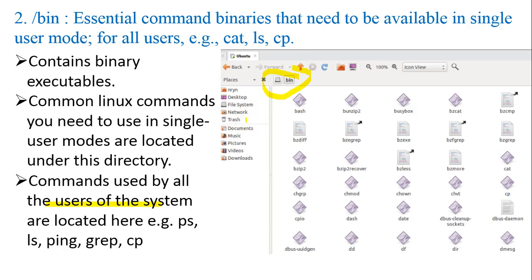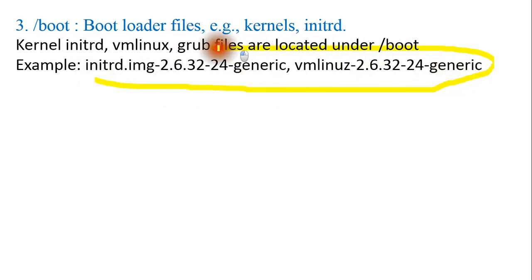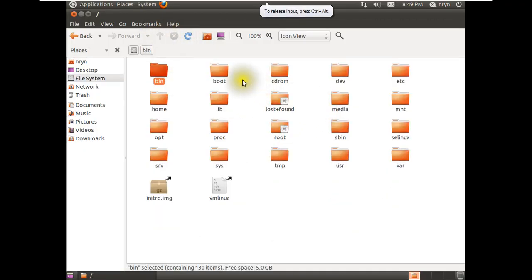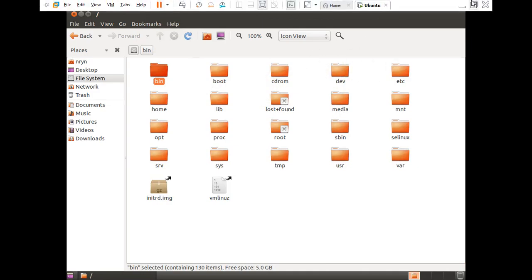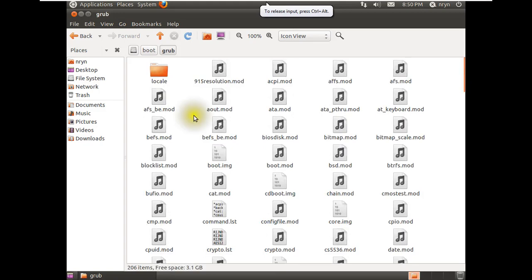Next is /boot — boot loader files, including the kernel, initrd, vmlinuz, and GRUB. This is very important because the operating system stores its boot files here. In the next video, I will show you how to install the operating system, and it will create these kinds of files. If you go to the boot folder, you can see GRUB and lots of other files and subfolders inside it.